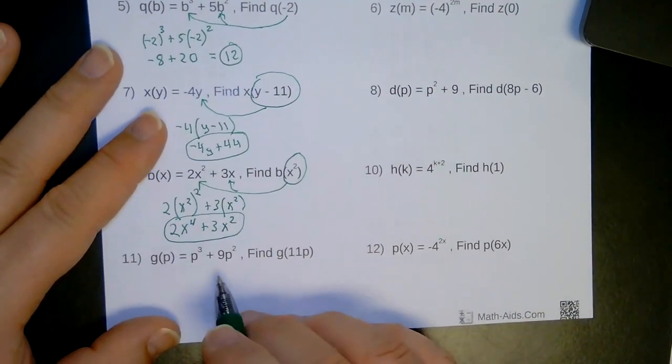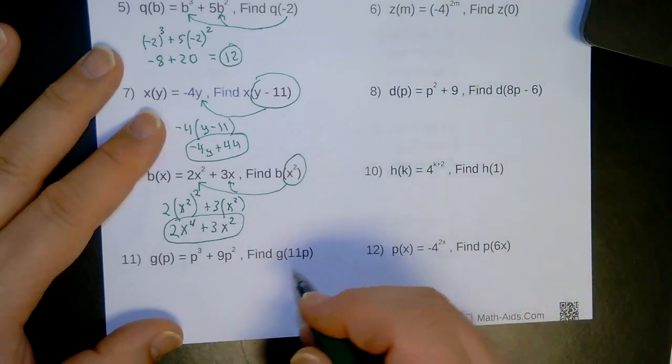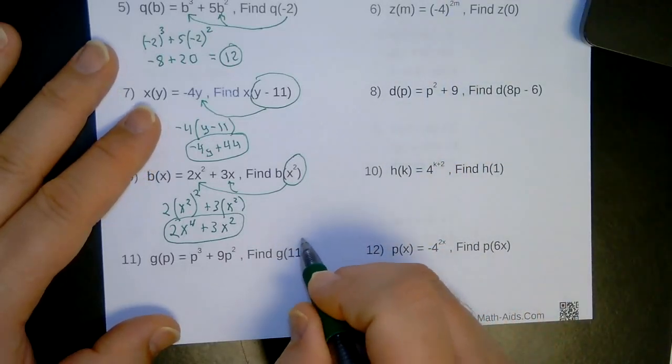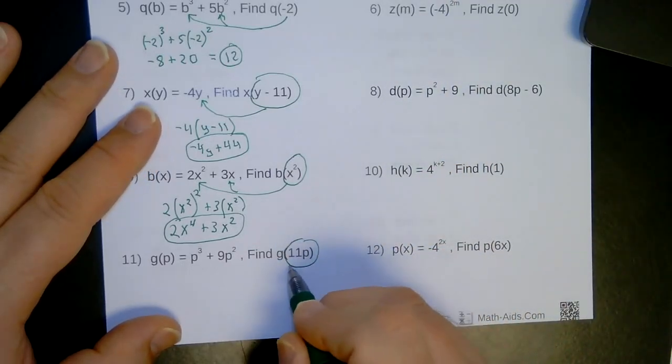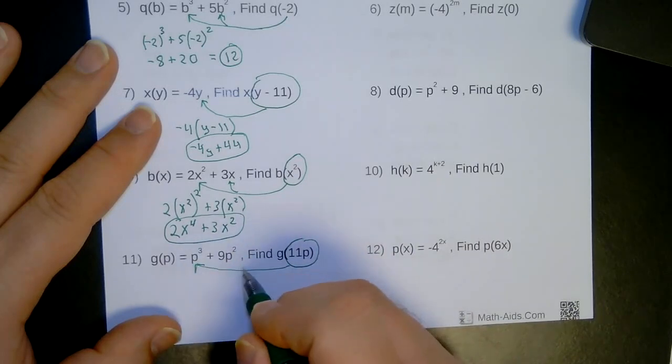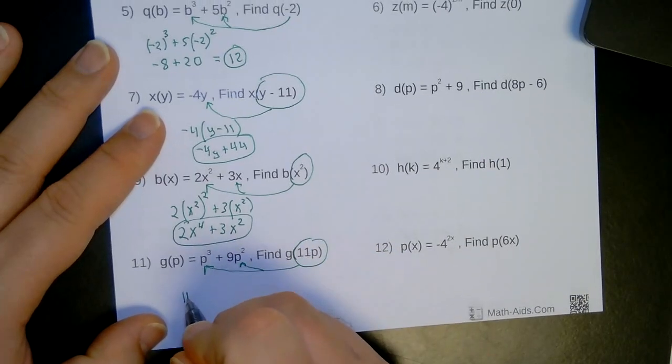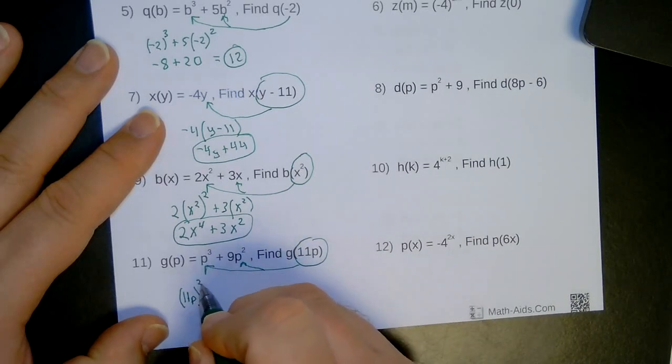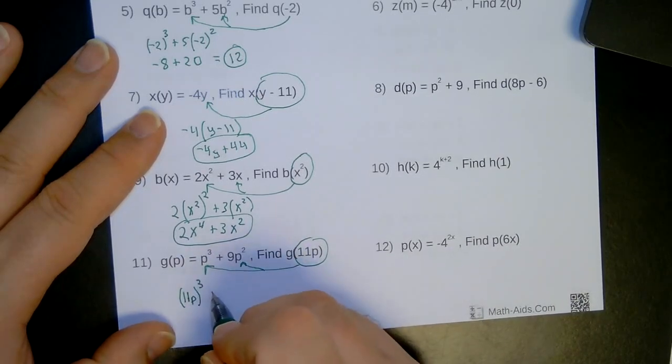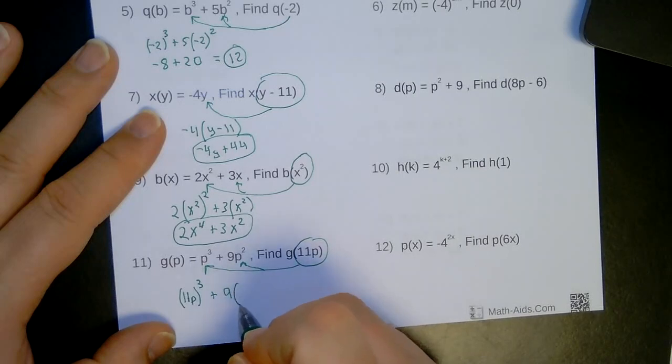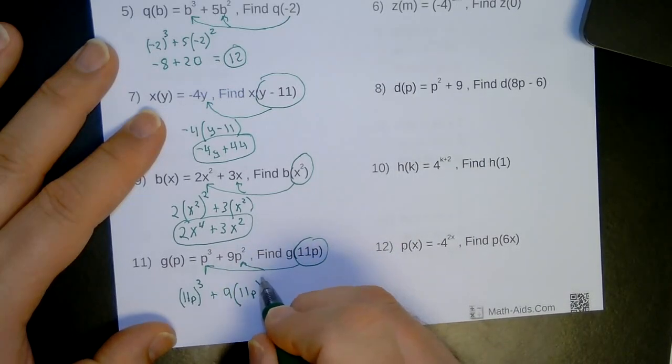And the last one that we'll do together. Because I'll let you do the evens and check your work. Is I'm going to circle 11p. And wherever I see a p, that is what I'm going to put in there. Okay, so we have 11p, use parentheses, raised to the third power, plus 9, parentheses, 11p squared.